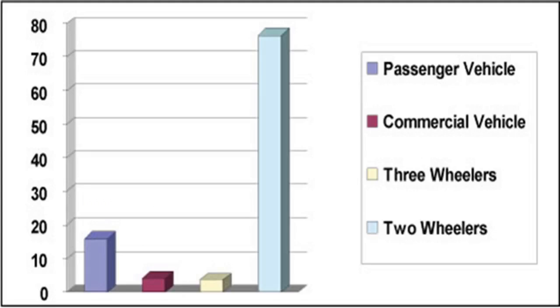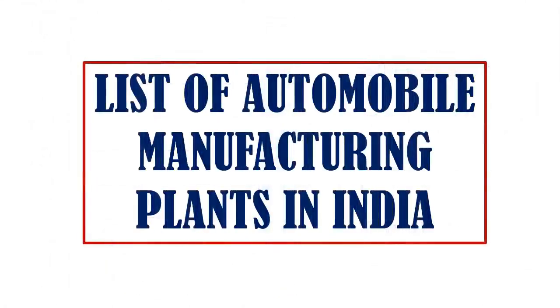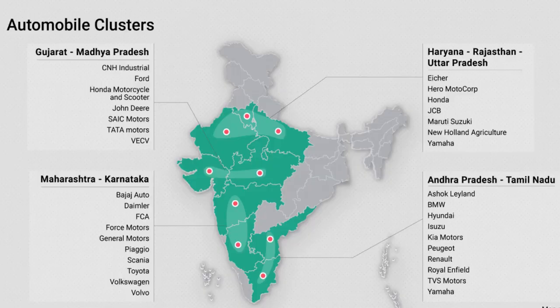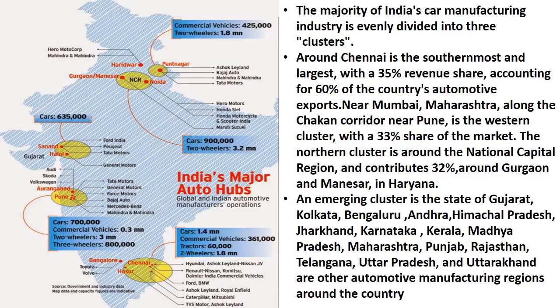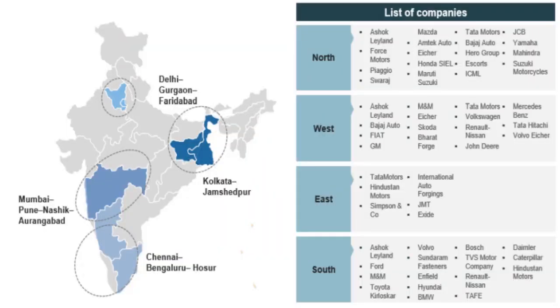Now let us discuss automobile manufacturing plants in India. The majority of India's car manufacturing industry is evenly divided into three clusters. Chennai in the south is the largest, with a 35% revenue share and accounting for 60% of the country's automotive exports. Near Mumbai, Maharashtra, along the Chakan corridor near Pune, is the western cluster with 33% market share. The northern cluster is around the National Capital Region, contributing 32%, around Gurgaon and Manesar in Haryana. An emerging cluster is the state of Gujarat, while Kolkata, Bengaluru, and Himachal Pradesh, along with Karnataka, Kerala, Madhya Pradesh, Maharashtra, Punjab, Rajasthan, Telangana, Uttar Pradesh, and Uttarakhand are other automotive manufacturing regions.